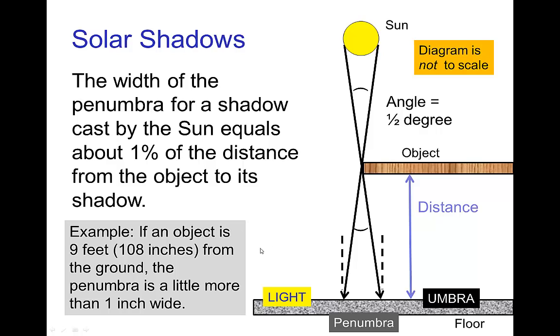As an example, if an object is nine feet from the ground, that's 108 inches, then the penumbra is about one percent of that, which means it's about one inch wide.